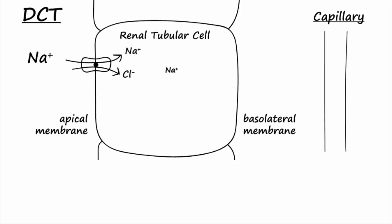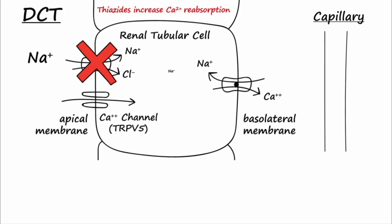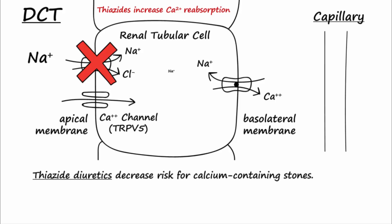To help prevent calcium stones, the physician may prescribe a thiazide diuretic. Thiazide diuretics block sodium chloride symporters on the apical membrane of renal tubular cells in the DCT. This acts to further decrease intracellular sodium levels in the DCT cells and thus increase the driving force for sodium to move into the cell via sodium-calcium antiporters on the basolateral membrane. This increased antiporter activity moves more calcium — that enters the cell via apical TRPV5 channels — out of the cell where it is then reabsorbed into the blood. Therefore, treatment with thiazide diuretics increases bone mineral density by increasing calcium reabsorption and decreasing calcium in the urine, lessening the risk for calcium stone recurrence. This mechanism also helps one understand how increased dietary sodium increases the risk for calcium stones.